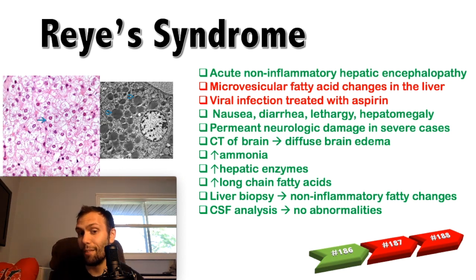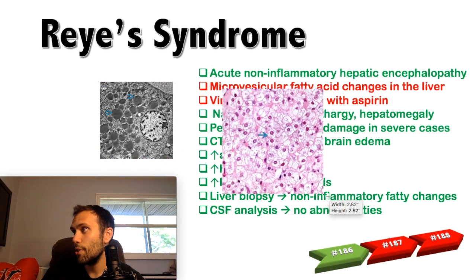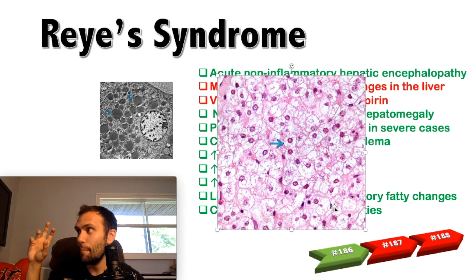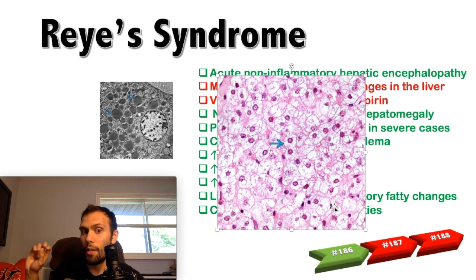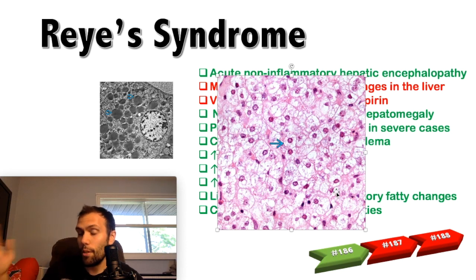On labs, you can expect elevated hepatic enzymes and increased long-chain fatty acids from inhibition of the beta-oxidation pathway. On liver biopsy histology, you see diffuse panlobular microvesicular steatosis — a buildup of fat in microvesicles inside the cells. Notice there are no lymphocytes, so there is no significant inflammation — just tiny clear fat vacuoles surrounding the hepatic nuclei. This image is classic for microvesicular steatosis seen in Reye syndrome.